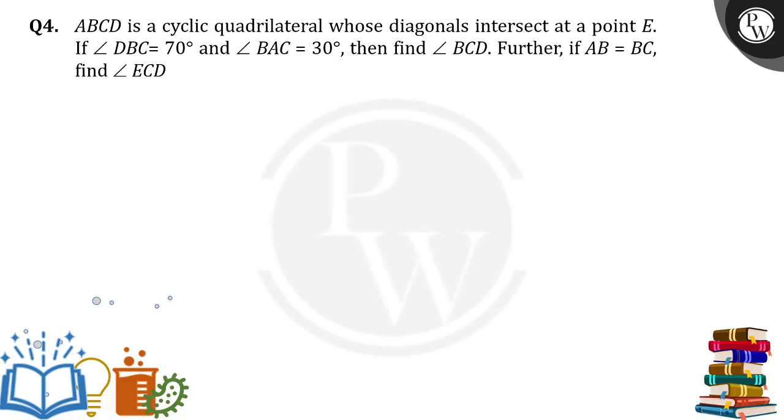Hello everyone. ABCD is a cyclic quadrilateral whose diagonals intersect at a point E. If angle DBC is 70 degrees and angle BAC is 30 degrees, then find angle BCD. Further, if AB is equal to BC, find angle ECD also.